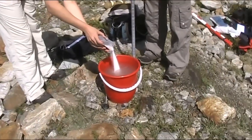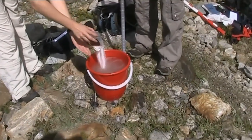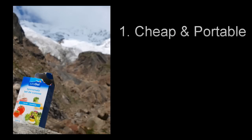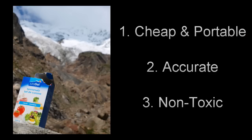Common table salt, sodium chloride, is popular for dilution gauging for three main reasons. Firstly, table salt is cheap, portable and readily available. Secondly, it can be accurately measured using an electrical conductivity meter. And thirdly, it is non-toxic or damaging to the environment.